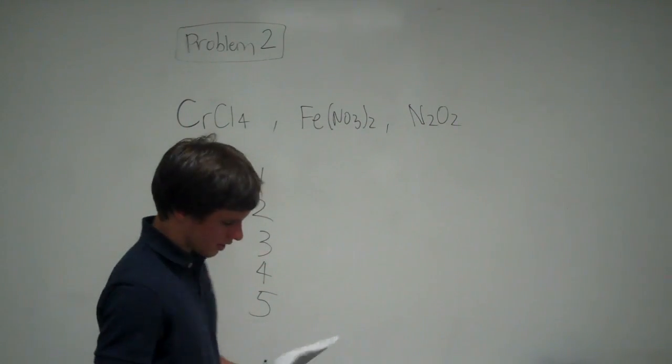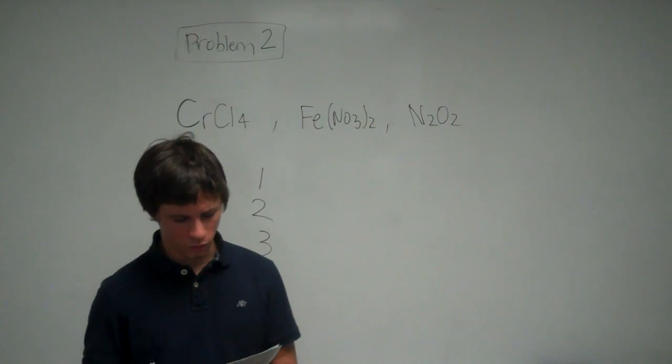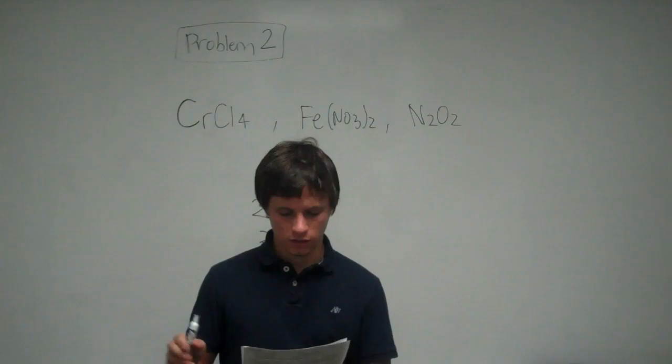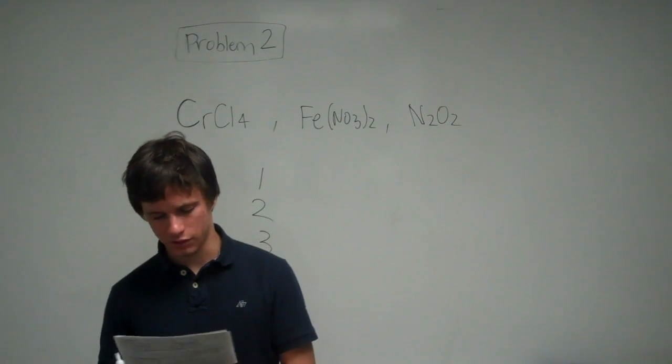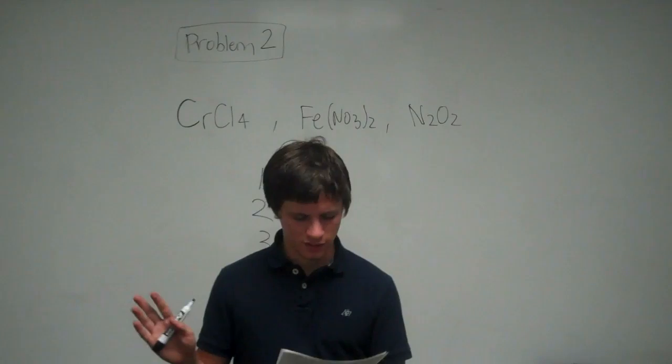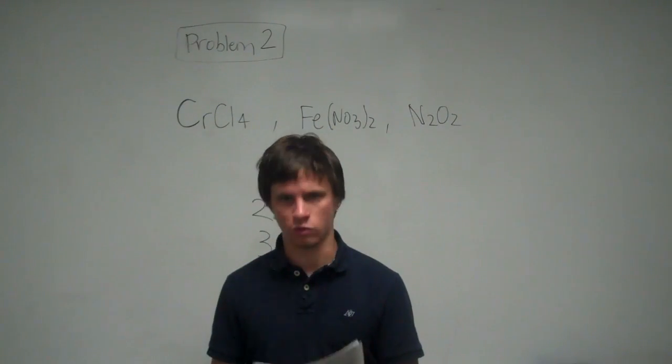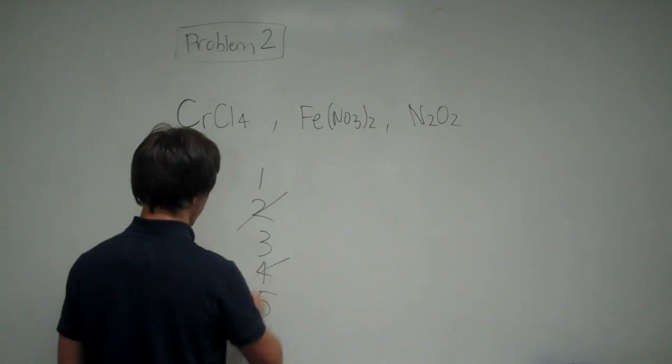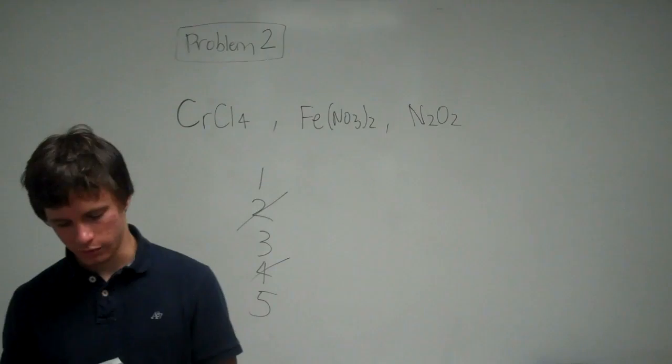If we're looking at our answers, we see that answer choices 2 and 4 both say nitrogen (II) oxide. When you see that Roman numeral next to nitrogen, you know that's instantly wrong because you never have to specify a Roman numeral for nitrogen. So 2 and 4 can't possibly be right because of that.